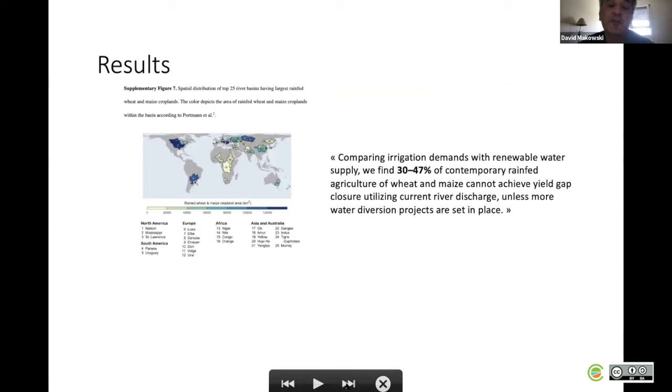Another interesting result of this study was to compare the water demand to close the yield gaps to the water available through the river discharge. I have no time to explain how this was computed, but the idea was to divide the world into several river basins, like 25 river basins.